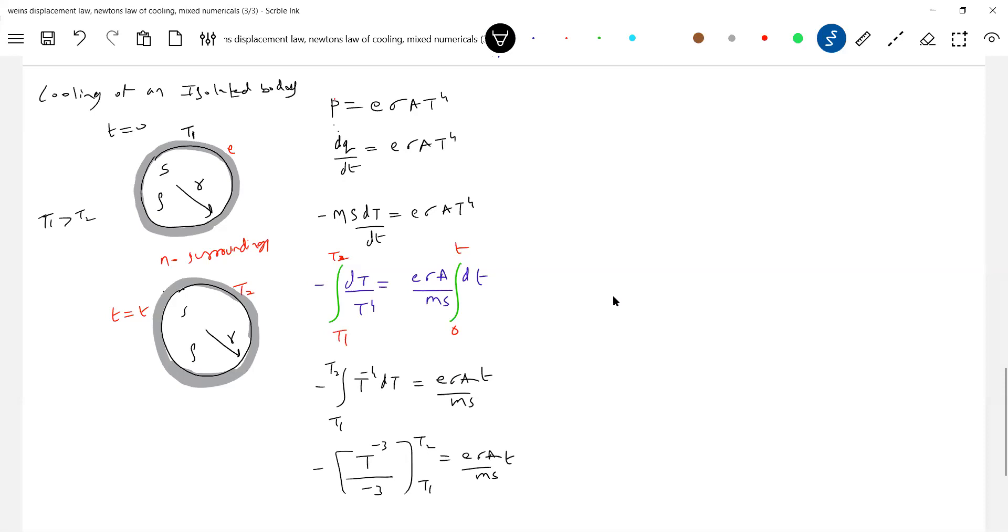Okay, let me substitute the limits. So this will be, the negative sign gets eliminated, so 1 by T2 cube minus 1 by T1 cube is equal to 3 e sigma A.